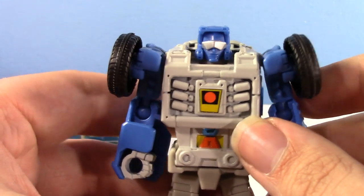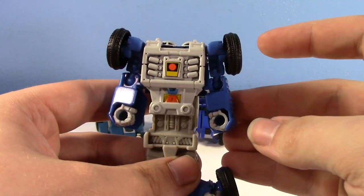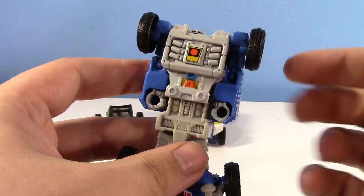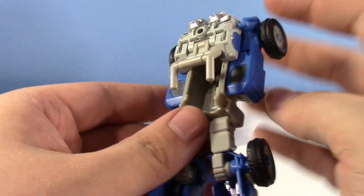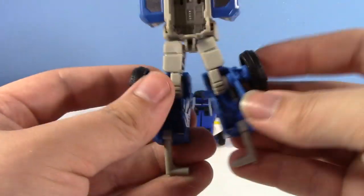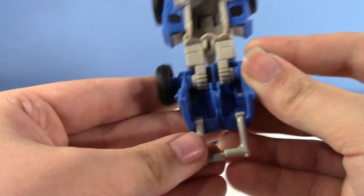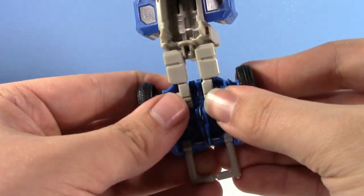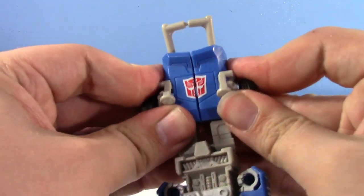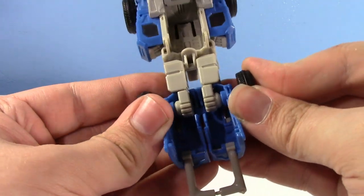This guy's definitely more of an homage to the toy than it is to the cartoon, but it does have a very cartoon accurate face and I really appreciate that. So transformation on this one: pretty similar. Fold that up, put the arms in, and then just kind of get the roll cage aligned. Then you get this, then you tab this in like that. See, you get that tabbed in together, then you get the roll cage tabbed in together. There's more stuff to just tab in but it's essentially the same kind of thing going on.